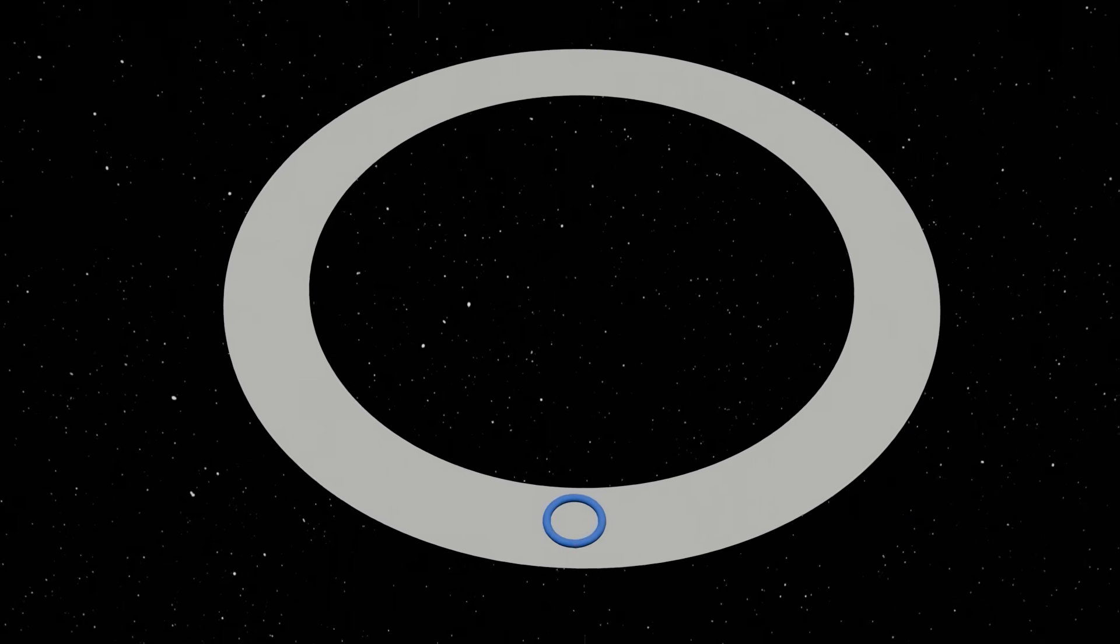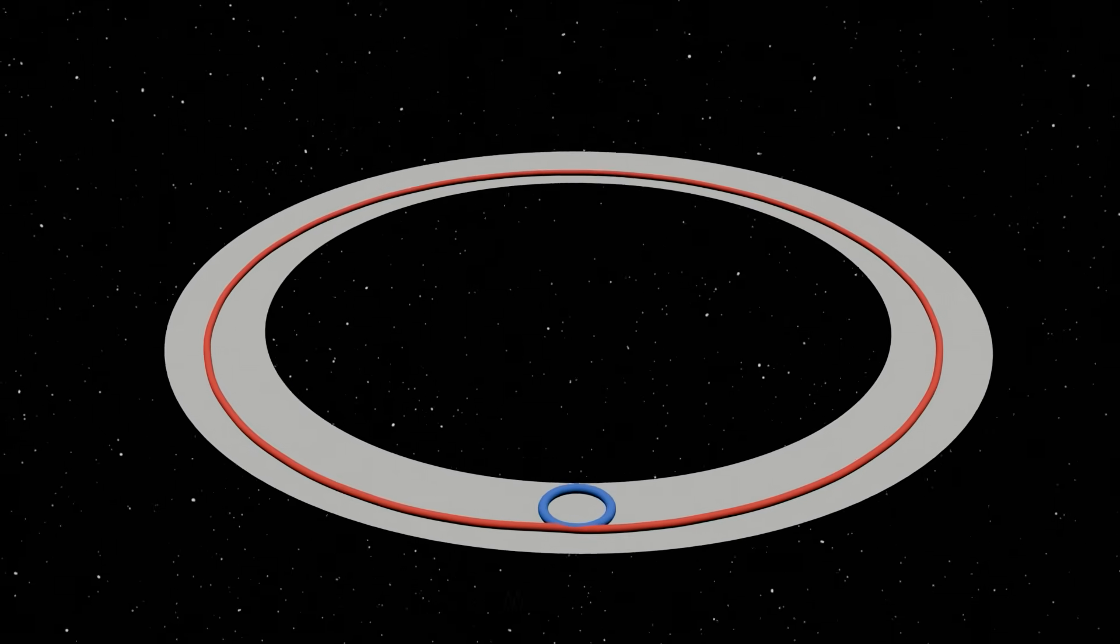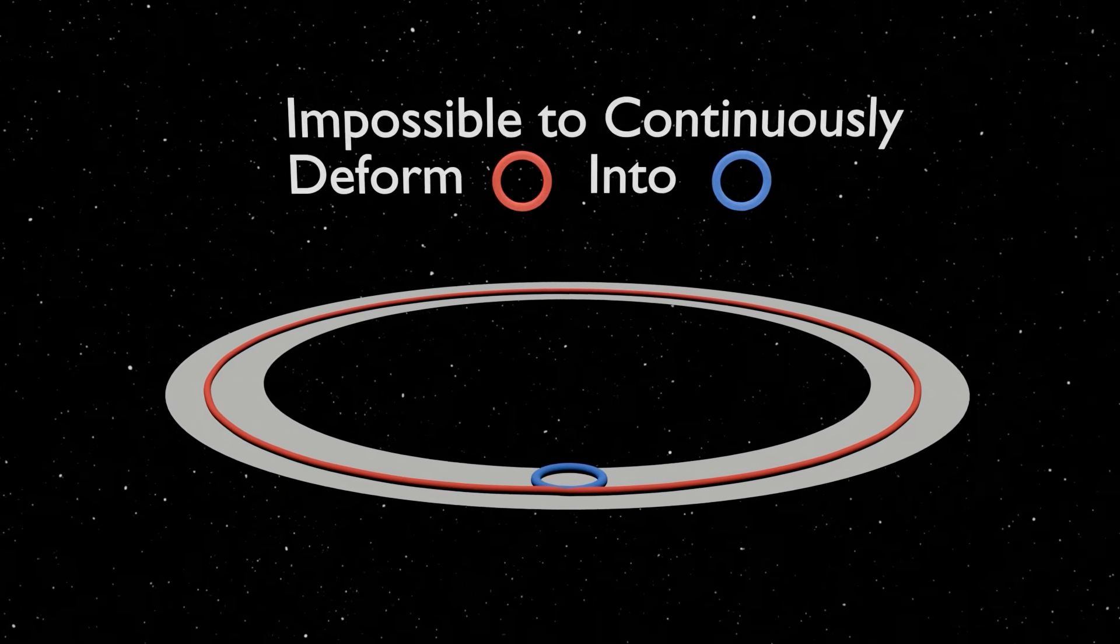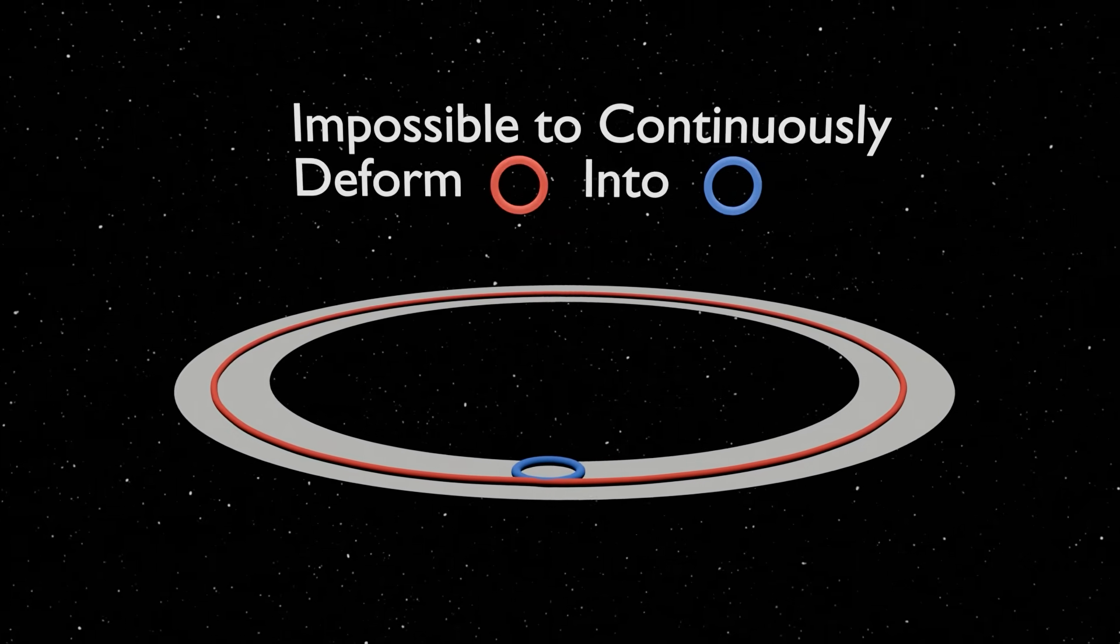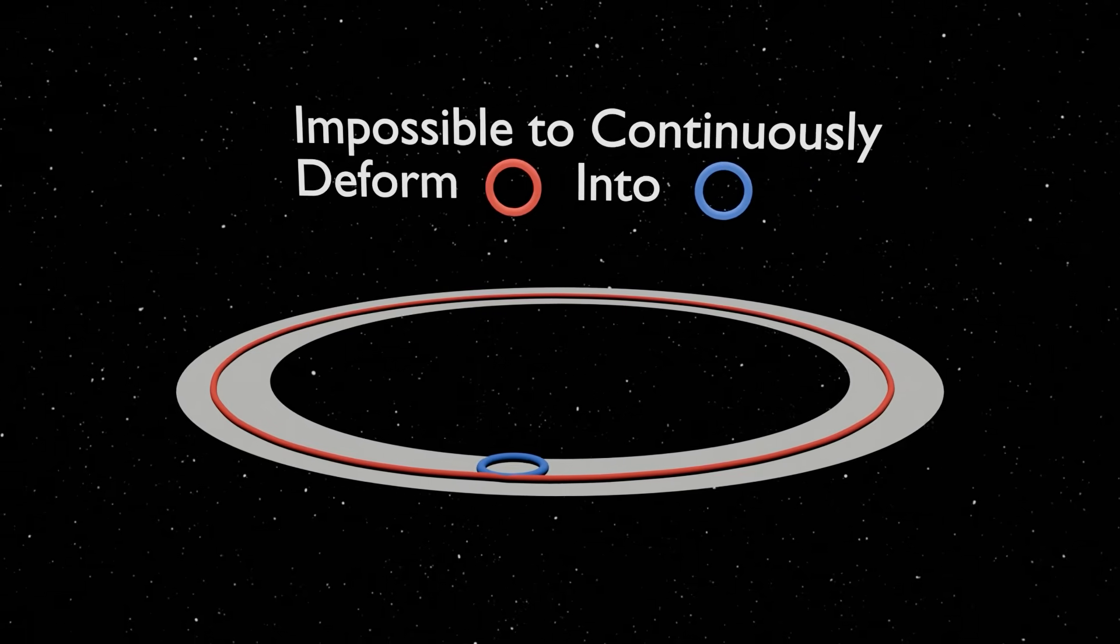In contrast, let's look at the fundamental group of a proper circle. In this case, if you look at these two loops, you can see that there is no way to deform the red loop into the blue loop. This happens precisely because there is a hole in the circle.